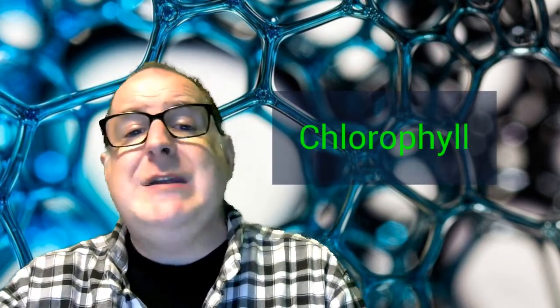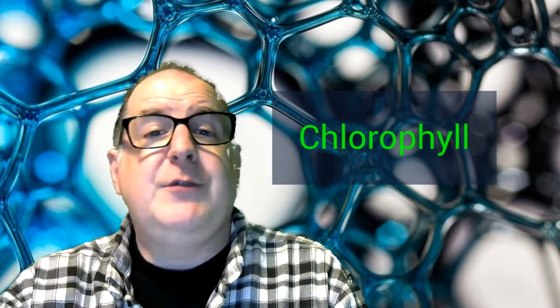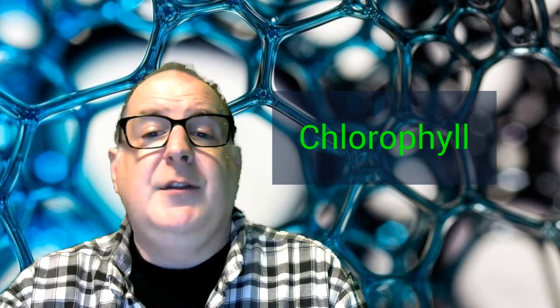The chloroplasts have chlorophyll, which is green pigment. This is what absorbs energy from sunlight. This energy is used to power photosynthesis.